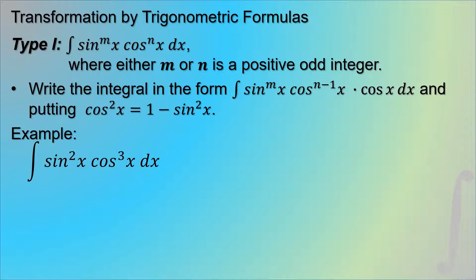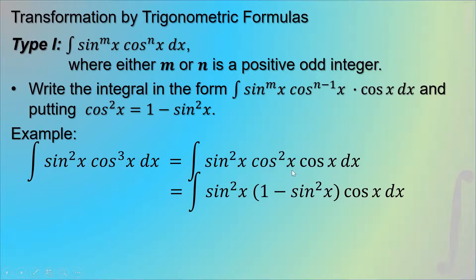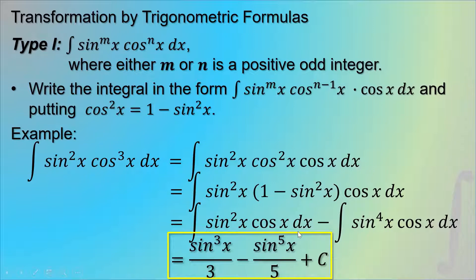For example, the integral of sin²x · cos³x dx. We separate cosine as cos²x · cos x, then substitute cos²x = 1 − sin²x using the Pythagorean rule. Distributing sin²x · cos x to both terms gives the integral of sin²x · cos x dx minus the integral of sin⁴x · cos x dx. Using the power rule since the differential of sin x is cos x dx, the result is sin³x/3 minus sin⁵x/5 plus C.